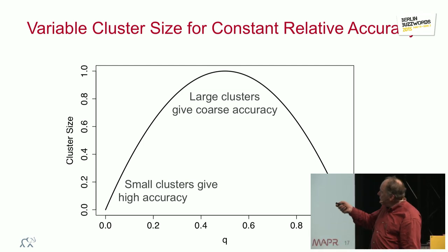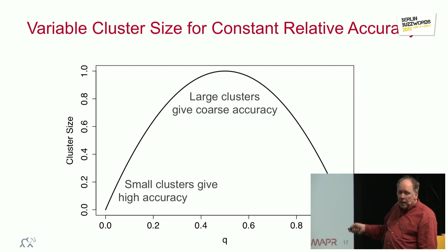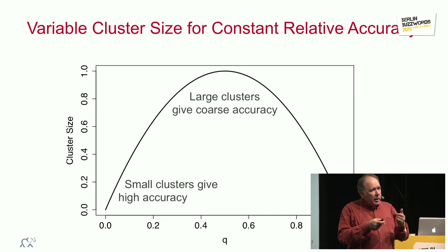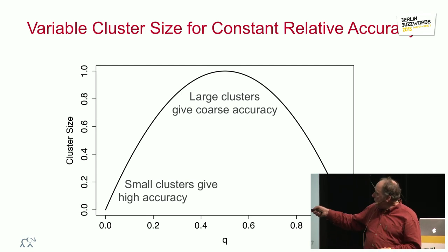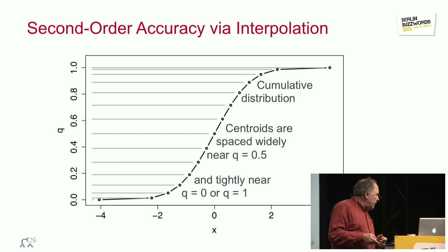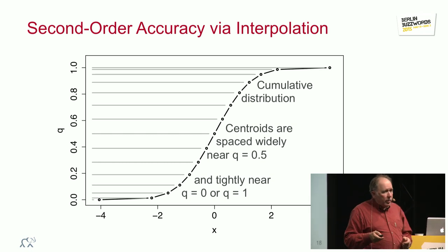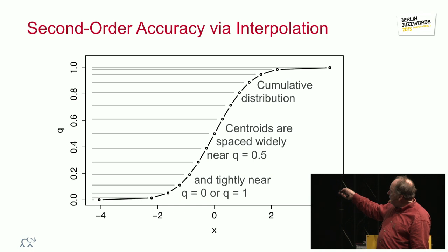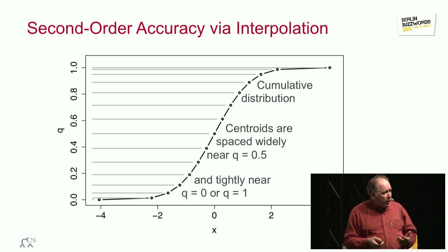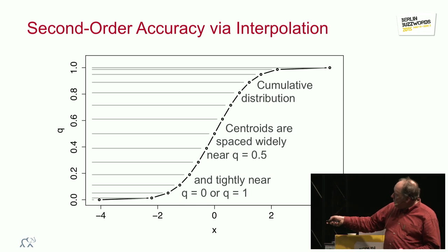Now, originally we used this form, but it was pointed out to me by a guy, he's in the credits at the end, that we could do better by having something that grows a bit faster. Something that has the square root of q times 1 minus q. And that's because we can do linear interpolation. Here is the cumulative distribution of just a normal distribution, doesn't really matter.